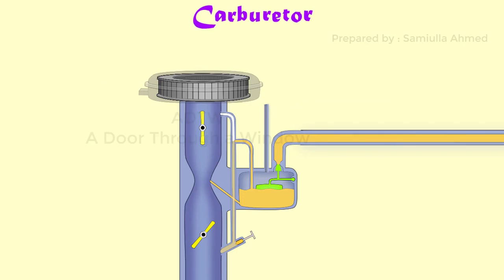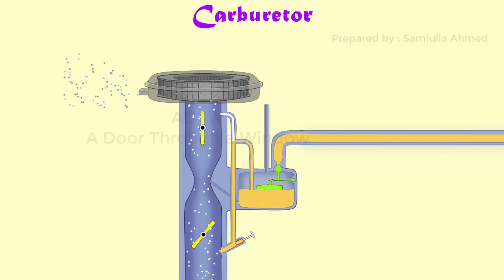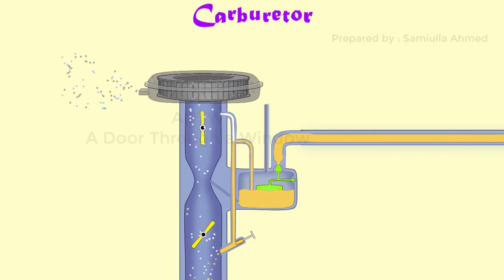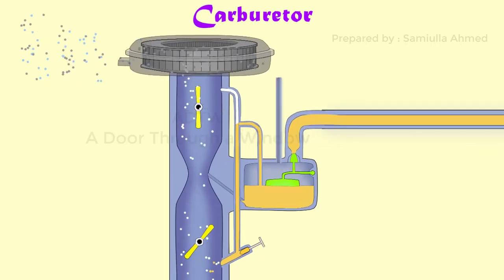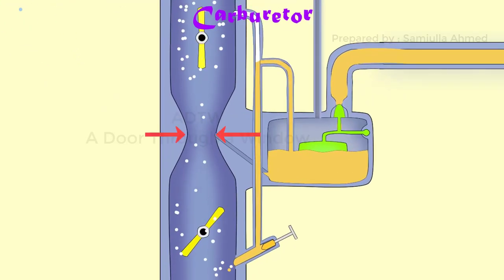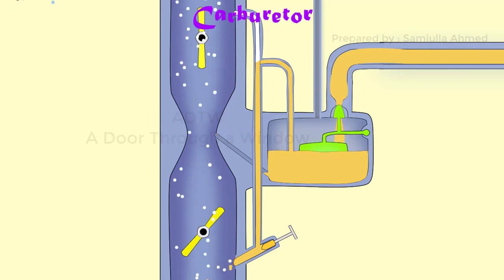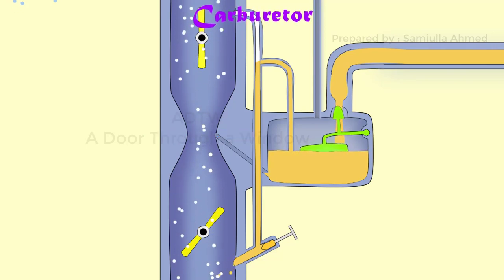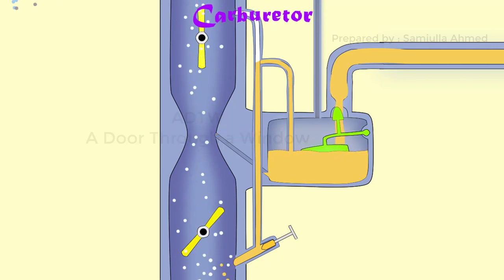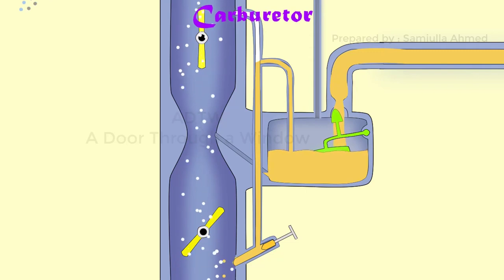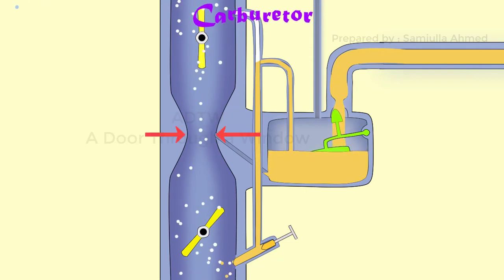This will keep the float chamber at atmospheric pressure. During the suction stroke, air is drawn through the venturi which has minimum cross section area at the throat. As the air passes through the venturi, the velocity of the air increases to maximum at the venturi throat.